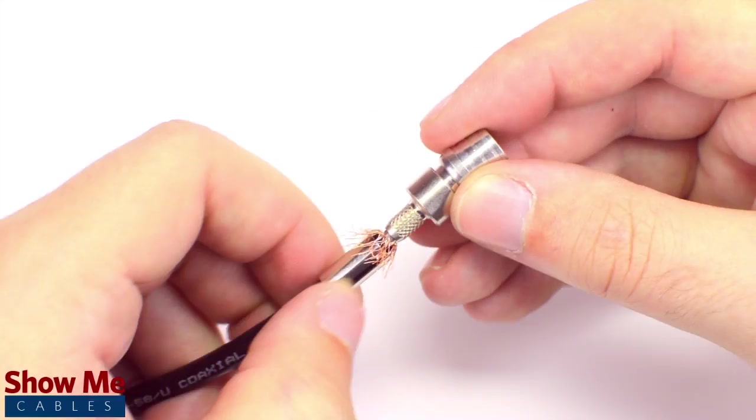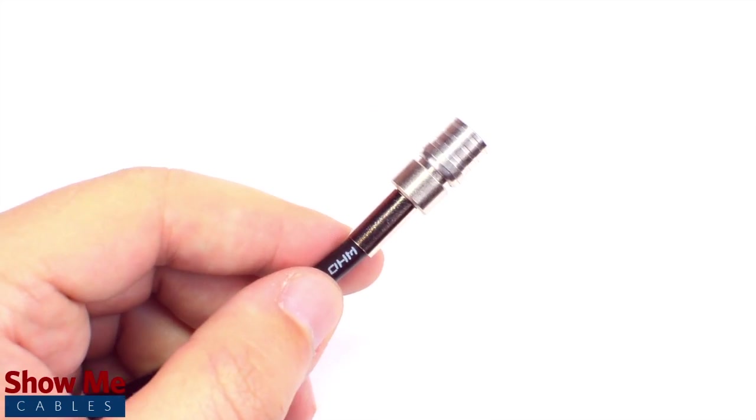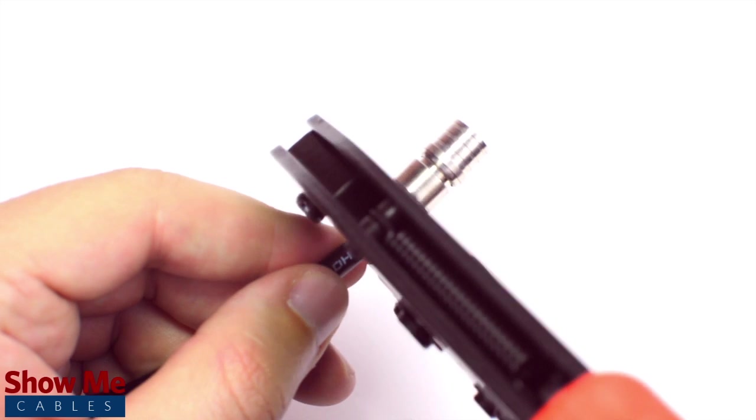Then, slide the ferrule up to the base of the connector, folding the shield with it. Crimp the ferrule under the outer jacket to complete termination.